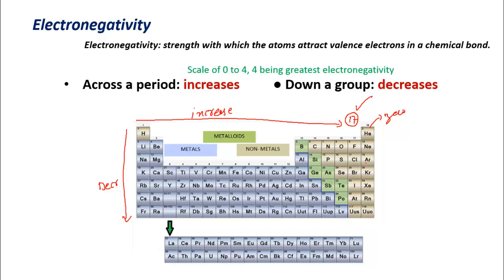The halogen family — fluorine, chlorine, bromine, iodine — has the highest electronegativity, and as you go down the group it decreases. Fluorine has the highest electronegativity of 4.0, and noble gases have zero. The second most electronegative element is oxygen at 3.5, followed by nitrogen and chlorine both at 3.0. Thanks for watching the video, bye for now.